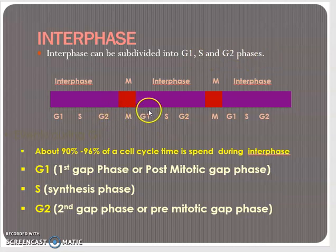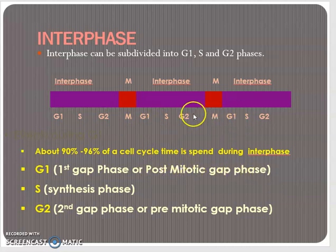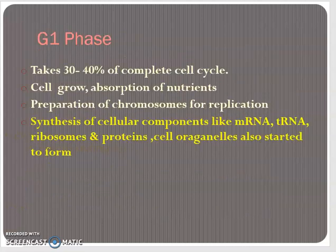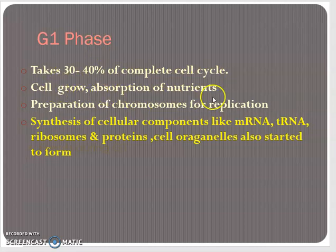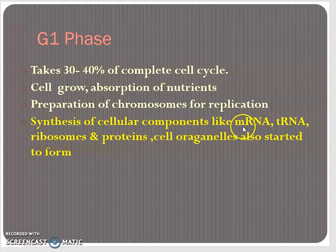In this diagram, you can see that G1 is coming after the mitotic phase, so its other name is post-mitotic gap phase, while G2 is coming before mitosis, so it is also called pre-mitotic gap phase. G1 phase takes 30 to 40 percent of the complete cell cycle. In this phase, the cell grows and absorbs nutrients and prepares chromosomes for replication. Besides that, the synthesis of cellular components like messenger RNA, ribosomes, and proteins also begins.